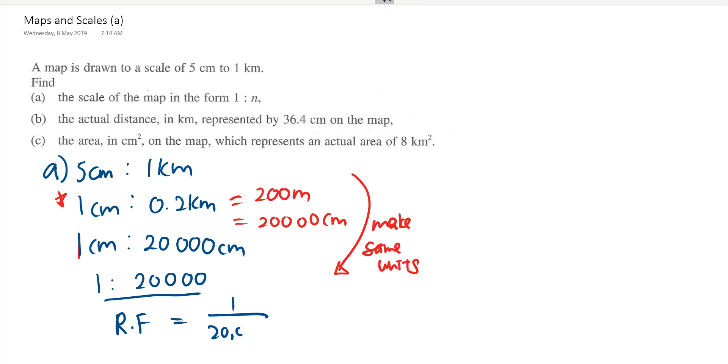So for part B where they ask for the actual distance, actual distance should be on the right side. Remember I told you, put the star in this 1 cm is to 0.2 km because that is usually the starting position where we do our working from.